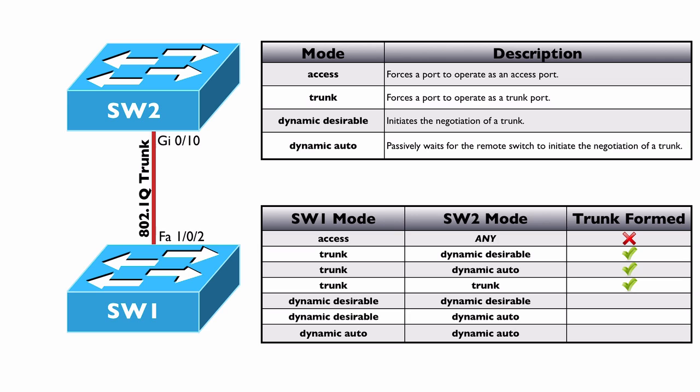What if both sides are set to dynamic desirable? They're both willing to become a trunk and they're both initiating DTP frames, so a trunk will be formed. If one side is set to dynamic desirable and the other side is set to dynamic auto, only the dynamic desirable side is going to be initiating those DTP frames, but they'll be responded to by the other side — a trunk will be formed.